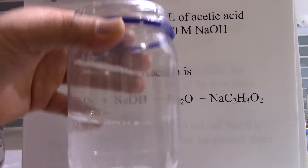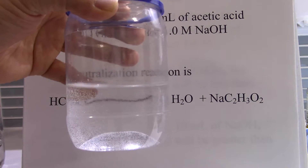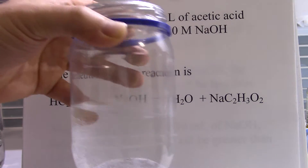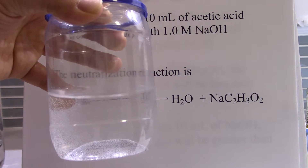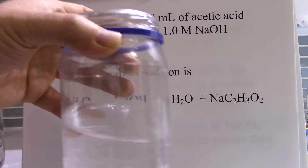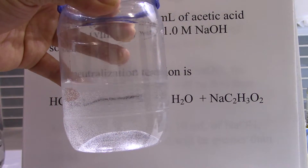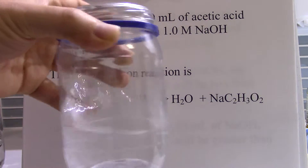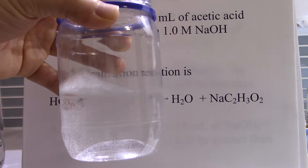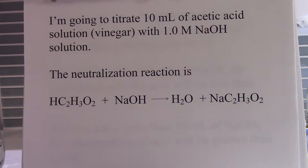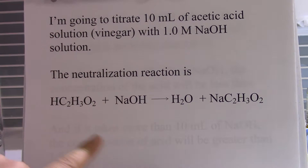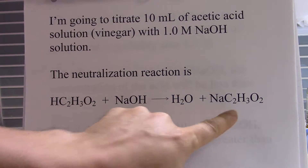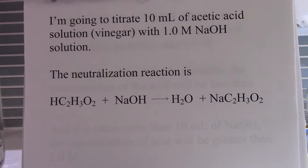Here's my acetic acid solution. I added some vinegar, poured in some water to dilute it to make the liquid visible, and there's also some phenolphthalein in here. The neutralization reaction that's going to happen: I've got vinegar, I'm going to add sodium hydroxide from the burette, and it's going to turn this into water and sodium acetate.